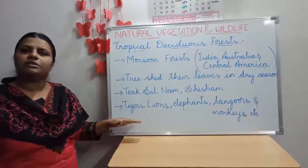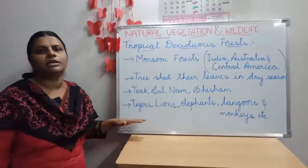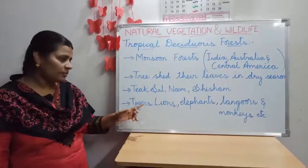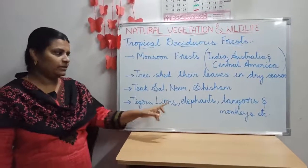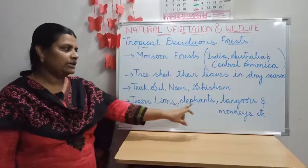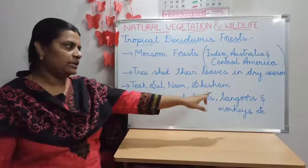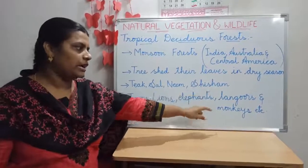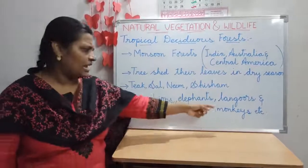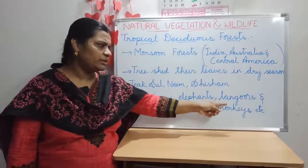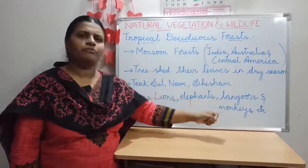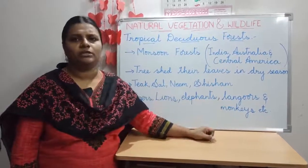Common animals you can find in tropical deciduous forests are tigers, lions, elephants, langurs and monkeys. Langurs are also a type of monkey.